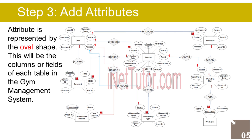The Workout Plan entity has the following attributes: Plan ID (Primary Key, represented with underline), Member ID (Foreign Key), Workout ID (Foreign Key), workout date, workout time, Instructor ID (Foreign Key).